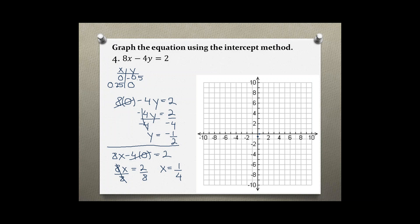Having two points I can draw my line. And because these two points are very close I have to be really careful to draw a straight line. But that is approximately my line going through these two intercepts.